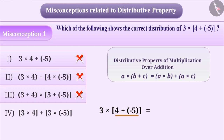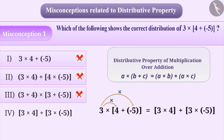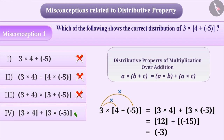The correct solution is: first, you either add the numbers written inside the bracket and then multiply the result with the number written outside the bracket, or first multiply the number written outside the bracket with both the numbers written inside the bracket, and then add the results. So, option 4 is the correct answer.